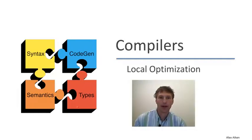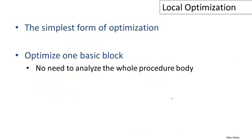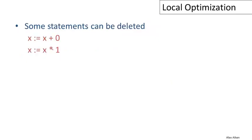We're now ready to begin talking about actual program optimizations, and we'll begin with local optimizations. Local optimization is the simplest form of program optimization because it focuses on optimizing just a single basic block — just one basic block — and in particular there's no need to worry about complicated control flow. Let's dive right in and take a look at a couple of simple local optimizations.